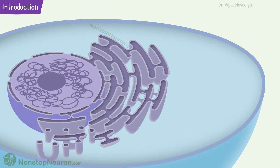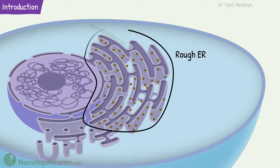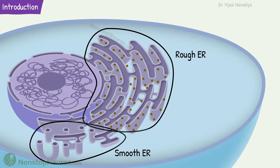It can be divided into two parts: rough endoplasmic reticulum and smooth endoplasmic reticulum. They are both connected to each other, so the endoplasmic reticulum is one continuous organelle.